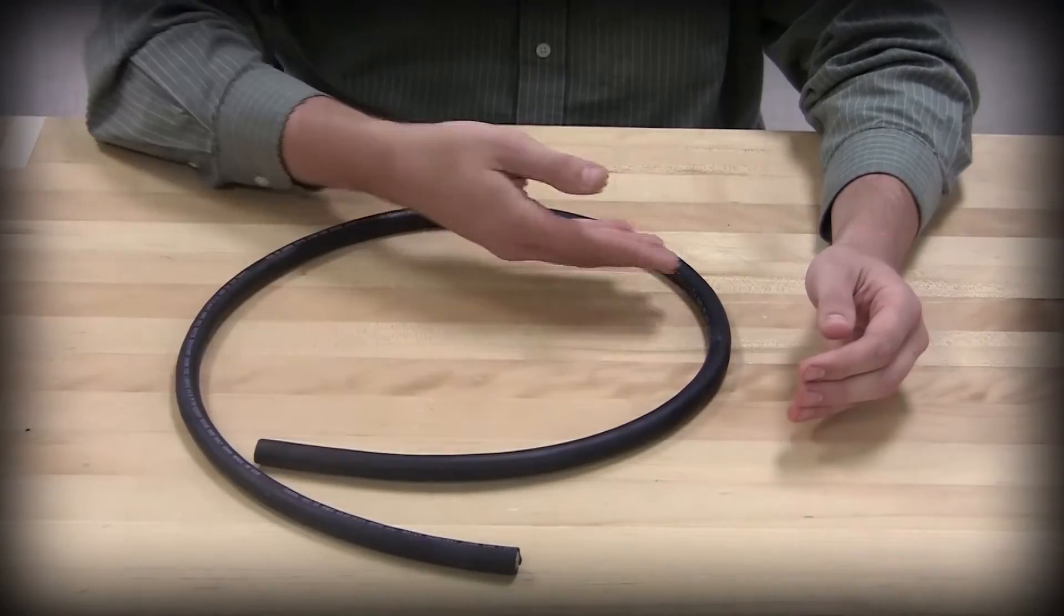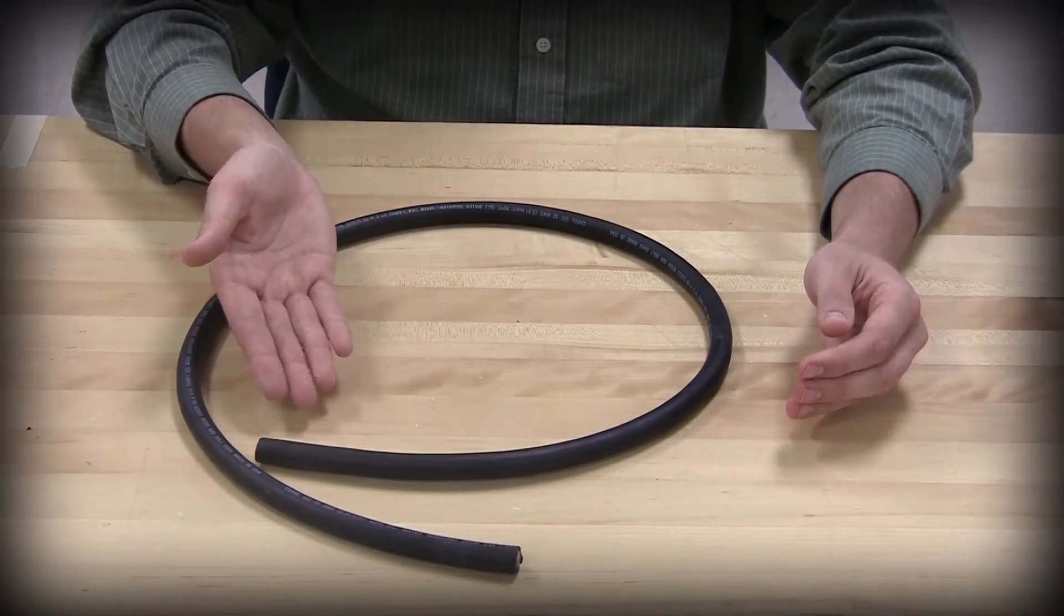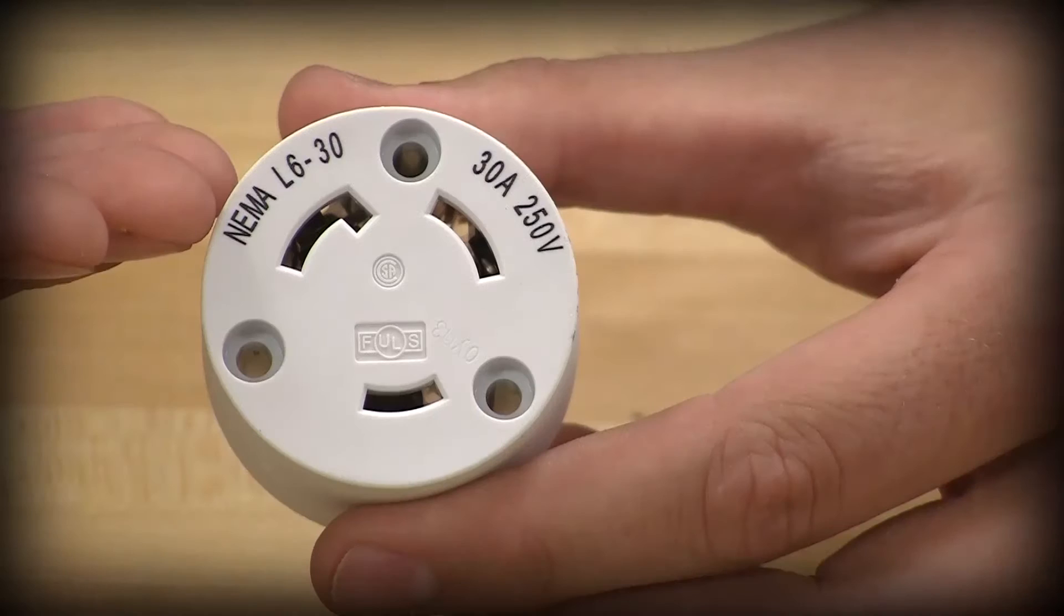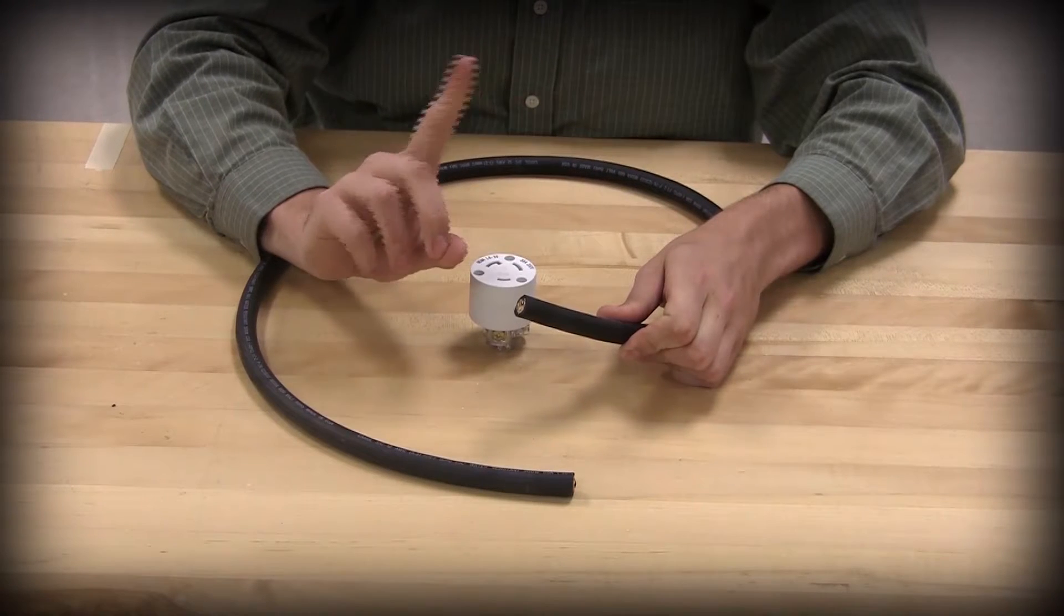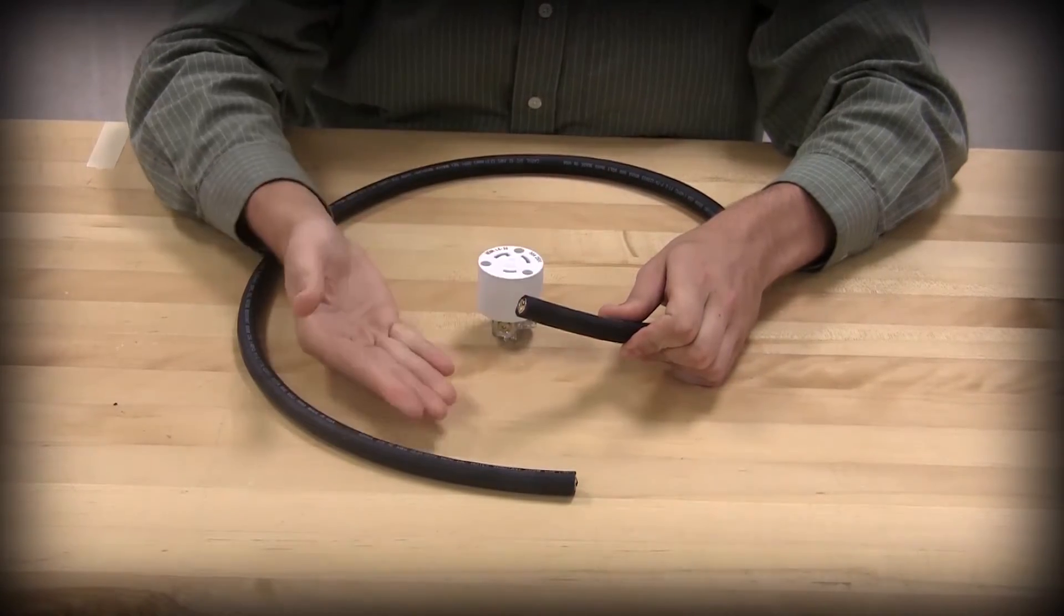For this application we'll be using a 12 gauge wire with a 30 amp 250 volt 3 wire connector. It is important that you do not pre-strip the cord jacket or conductors before assembly.